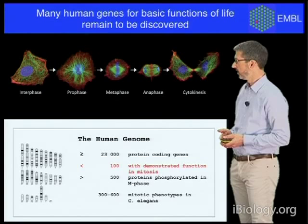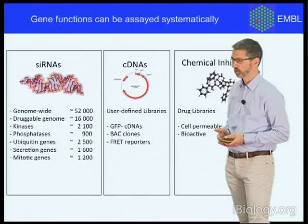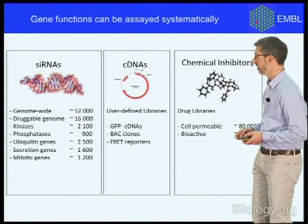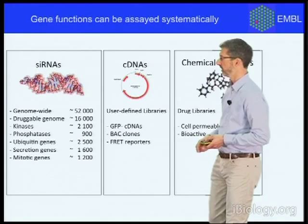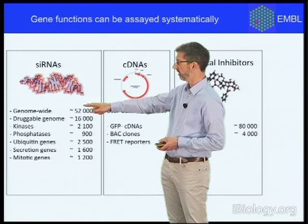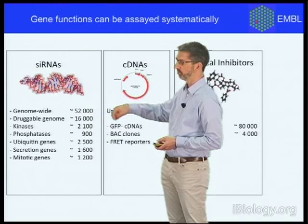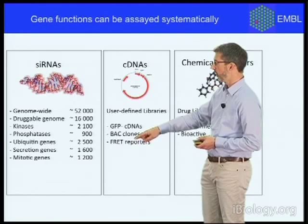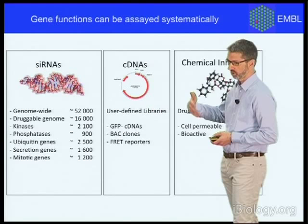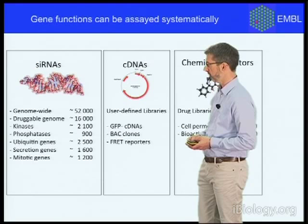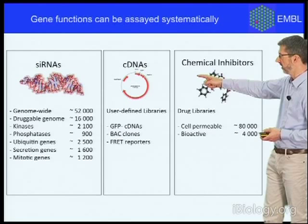So how do you go about identifying genes for essential functions? The first thing you need is a way to inhibit the function of the gene. The most popular way of doing that is to use RNA interference — libraries of small interfering RNAs that cover the whole genome or certain subsets of it, to inhibit the expression of a gene one by one and record the phenotypic consequence. An alternative is to use overexpression, putting genes into cDNA constructs to artificially increase the gene dosage. More recently, very popular is also to use specific chemical inhibitors in drug libraries to systematically inhibit gene functions.